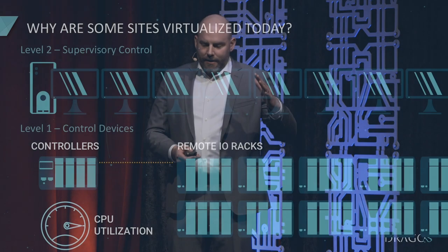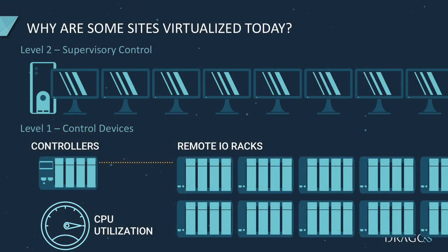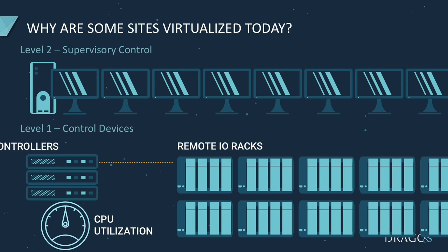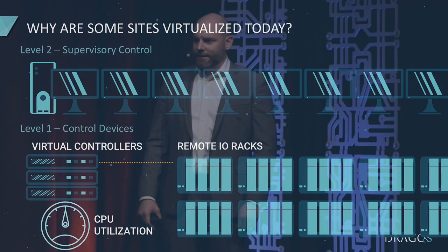So what we're seeing across a number of different DCS vendors is the virtualization of these controllers. When they hit that peak, they will add in commodity IT hardware and use that as the processing CPU for these control systems rather than the traditional industrially hardened CPUs. This works well in DCS environments because those servers are often in climate-controlled areas of the plant anyway, so they don't need to be overly industrialized.